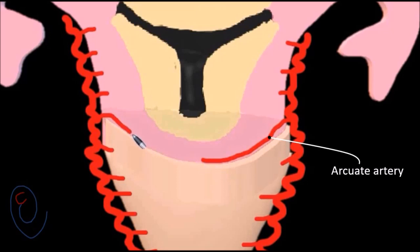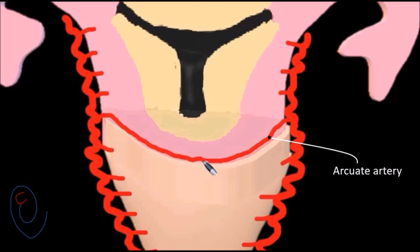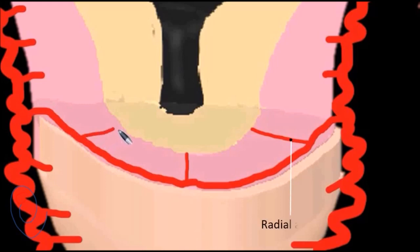Arcuate arteries from both sides anastomose with each other in the midline. They encircle the uterus and look like an arc — that is why they are called arcuate arteries. From the arcuate artery, the radial artery arises at a right angle, extending through the myometrium to reach the endometrium.